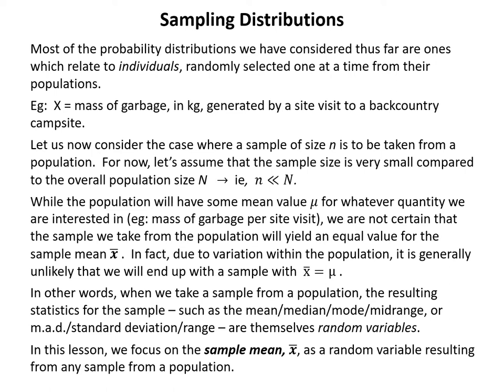Due to variation within the population, it is generally unlikely that the sample mean will exactly equal the population mean — that is, where x-bar equals mu. When we take a sample from a population, the resulting statistics — such as the mean, median, mode, mid-range, mean absolute deviation, standard deviation, or range — are themselves random variables. In this lesson we focus on the sample mean x-bar specifically as a random variable resulting from any sample from a population.